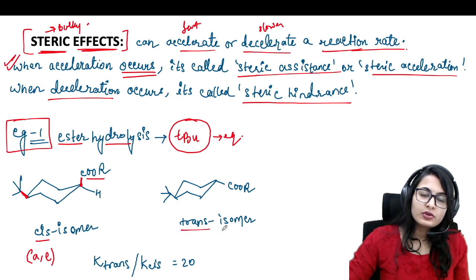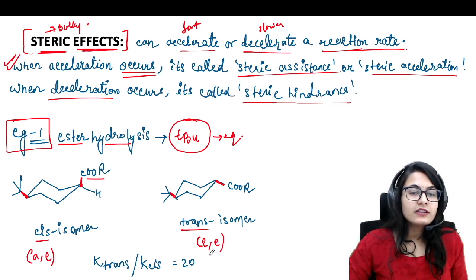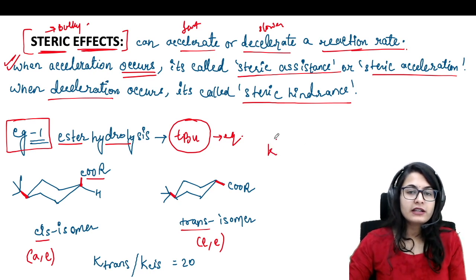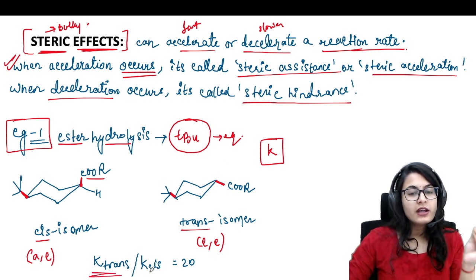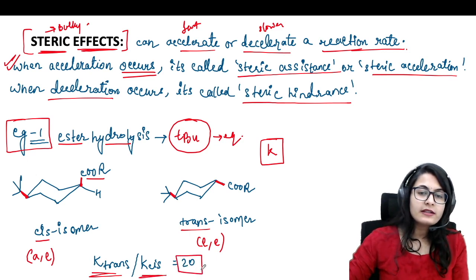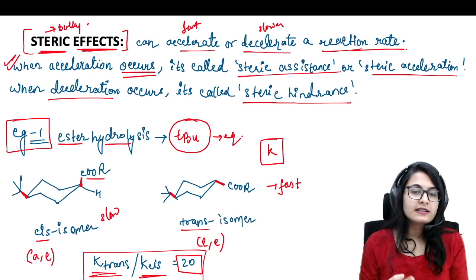In the trans isomer, both groups could be above and below, so both of them could be equatorial and equatorial. When we do the hydrolysis of these two esters, we find a difference in the rate of reaction. We have calculated the difference in the rate constant: the ratio of the rate constant of the trans isomer to the cis isomer is found to be 20, which means that the trans is reacting fast and the cis isomer is reacting slow. Trans is greater than cis.